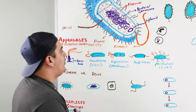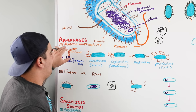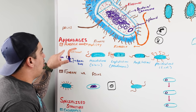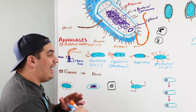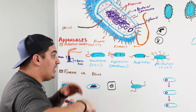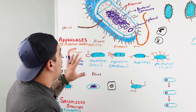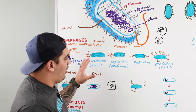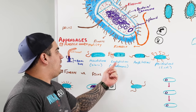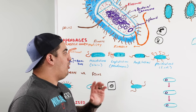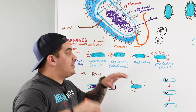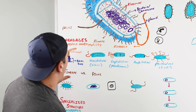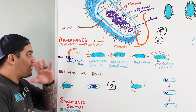To summarize flagella: it's designed for motility, has a basal body, hook, and filament, is powered by ATP. The configurations are: monotrichous (one flagella, one end), lophotrichous (multiple flagella, one end), amphitrichous (flagella on both ends), and peritrichous (flagella across the entire surface).